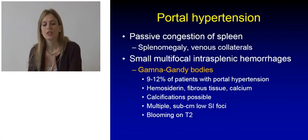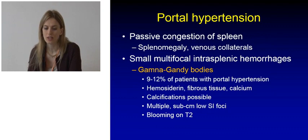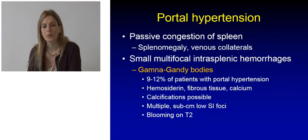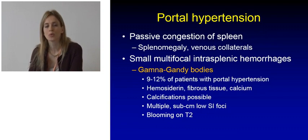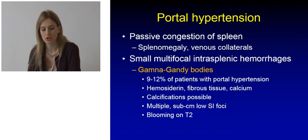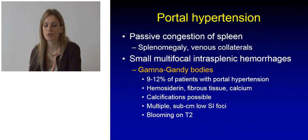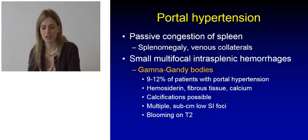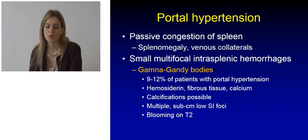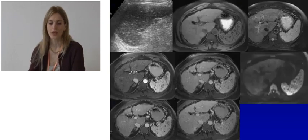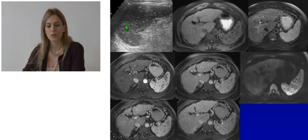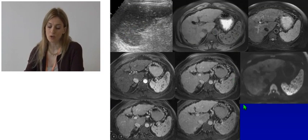Portal hypertension induces passive congestion of the spleen, resulting in splenomegaly and the presence of several venous collaterals. In the splenic parenchyma we can also appreciate small multifocal intrasplenic hemorrhages and the so-called Gamma-Gandy bodies. These are seen in up to 12% of patients with portal hypertension and are made of hemosiderin, fibrous tissue, and calcium. They can also show coarse calcifications. On MRI, these appear as multiple low-signal intensity foci which show blooming on T2 images, as seen here in a large spleen with many small calcified nodules which appear hypo-intense on all MR sequences.